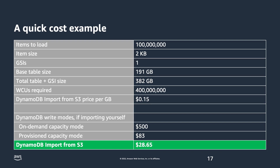Let's look at a quick cost example. Here we compare the cost of writing code to import data yourself as opposed to using the DynamoDB import from S3 feature. With a hundred million items averaging two kilobytes each and one global secondary index, you can see the cost of doing this with the import from S3 feature is much cheaper — even without factoring in the time it would take you to write and test your own code to do the import. $28.65 as compared to $500 is a big difference. For more information on cost for import from S3, check the links in the video description.